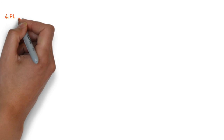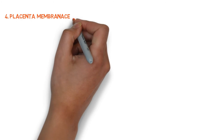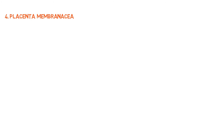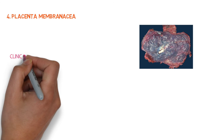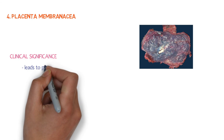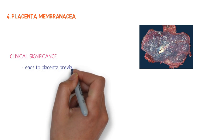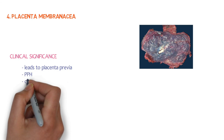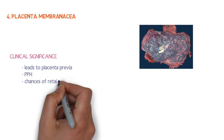Placenta membranacea: the placenta is unduly large and thin. Clinical significance: encroachment of some part of the lower segment leads to placenta previa; imperfect separation in the third stage leads to PPH; and there are increased chances of retained placenta.